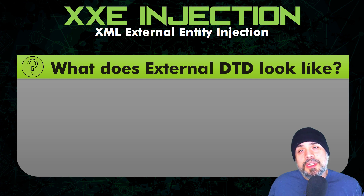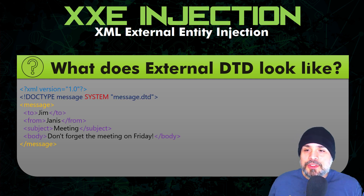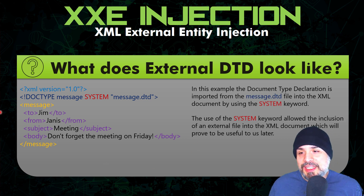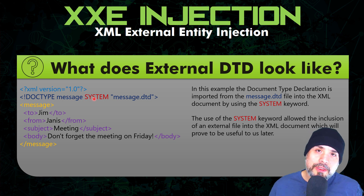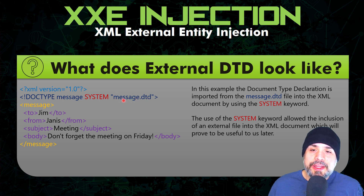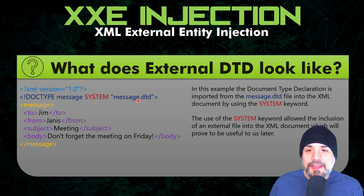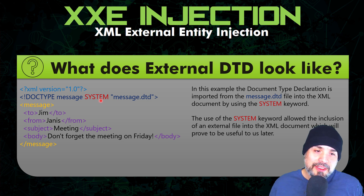What does it look like to define an external DTD? Here we have an external DTD definition — we simply use the doctype message with the system keyword, followed by the URI or URL. This could be a local resource or a URL to a resource on another server. The DTD is defined within the message.dtd file. The system keyword is very useful to us later because it allows the inclusion of an external file into the XML document, so keep that in mind.